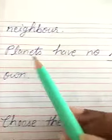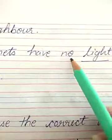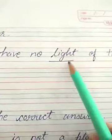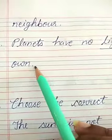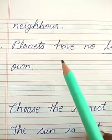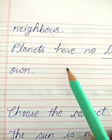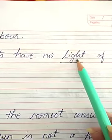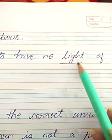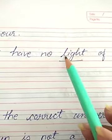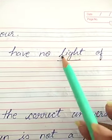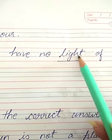Number 5. Planets have no dash of their own. So, what do planets not have of their own? They don't have light. They have no light of their own. So, the answer is light. L-I-G-H-T, Light.